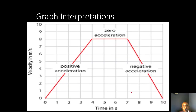Now let's look at some graph interpretations for acceleration. If your acceleration is going up, this is positive acceleration — the line is increasing over time. If you're not accelerating at all, your line is going to be straight, showing zero acceleration. And if you're slowing down, you'll have negative acceleration, which shows the line going down over time.